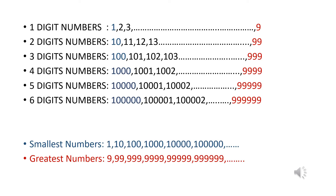Recap: One-digit numbers are from 1 to 9. The smallest one-digit number is 1 and the greatest is 9. Two-digit numbers are from 10 to 99. The smallest two-digit number is 10 and the greatest is 99. Three-digit numbers are from 100 to 999. The smallest three-digit number is 100 and the greatest three-digit number is 999.